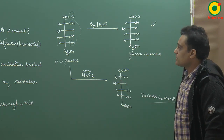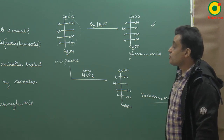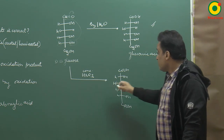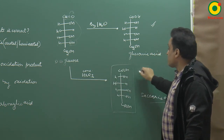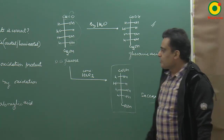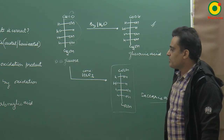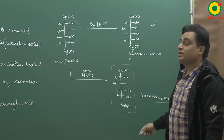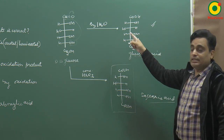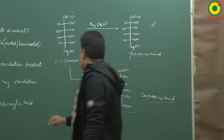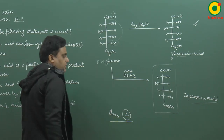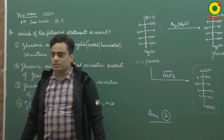Oxidizing glucose with HNO3 gives saccharic acid, not gluconic acid. Saccharic acid is a dicarboxylic acid, so statement 3 — that gluconic acid is obtained by oxidation of glucose by HNO3 — is wrong. Statement 4 — that gluconic acid is a dicarboxylic acid — is also wrong, because saccharic acid is the dicarboxylic acid, not gluconic acid. Therefore, the correct answer is statement 2.